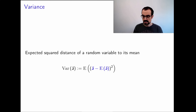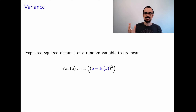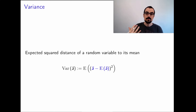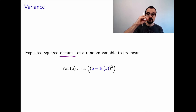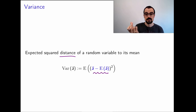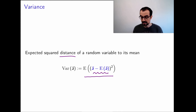Let's move on to the variance. In some sense, the mean of the random variable is its center. The variance tells us the expected square distance of the random variable to its mean — how close it is to its own mean. In order to measure this distance, we use the mean square metric. The variance is the expected square distance between the random variable and its mean.